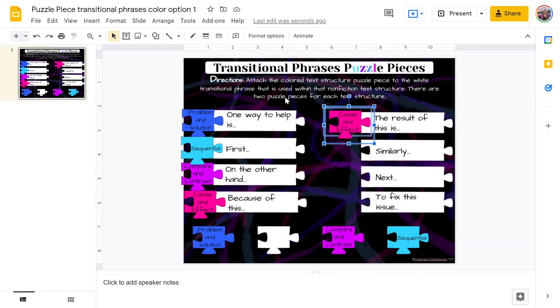You'll notice once the students use two of one type of text structure, that puzzle piece space where they were turns white. That's just a good cue for them saying there's no more puzzle pieces here that you can drag.